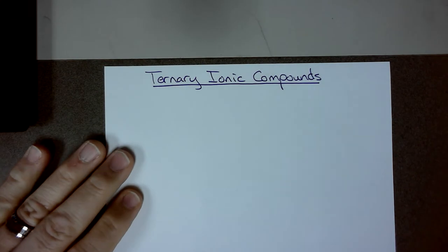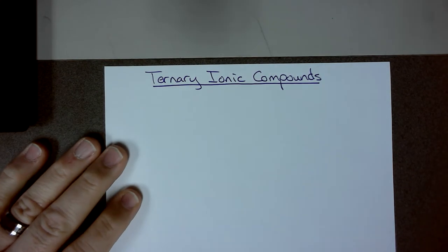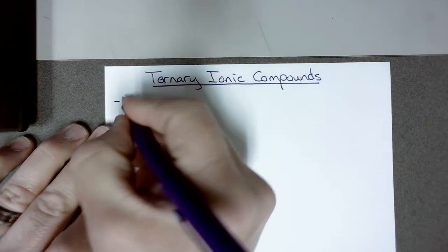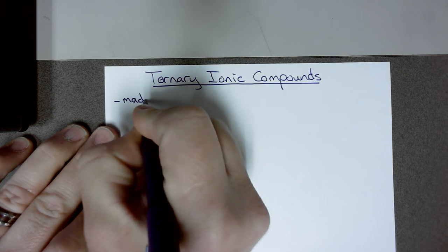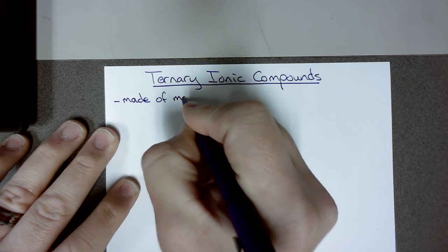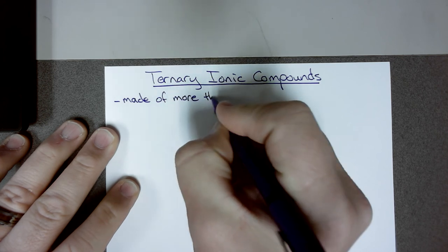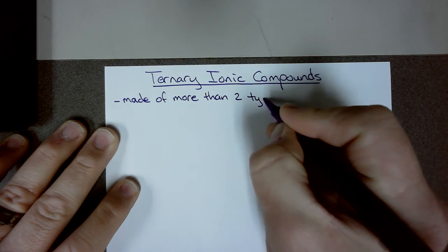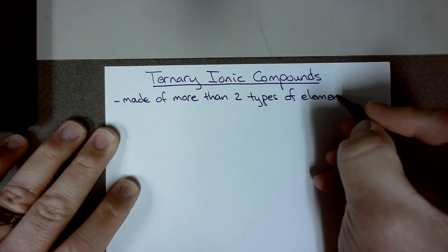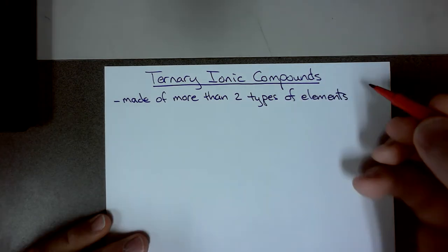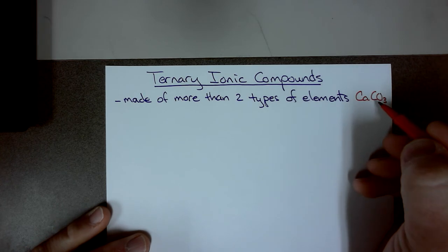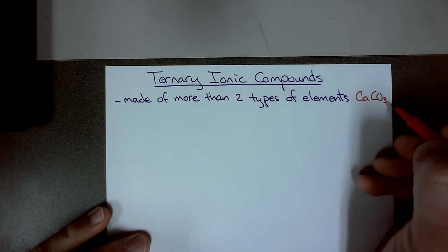Hello Bobcats. Today in this video we will be discussing ternary ionic compounds. Now ternary ionic compounds are compounds that are made of more than two types of elements. So an example would be calcium carbonate. Now here we have calcium, carbonate, and oxygen. So we have three different elements here.